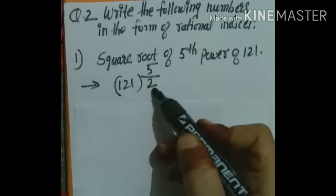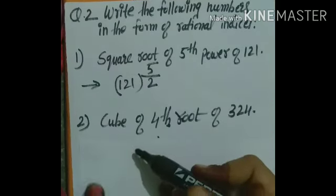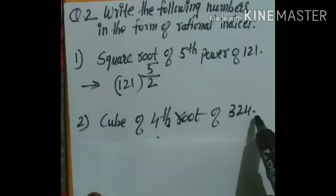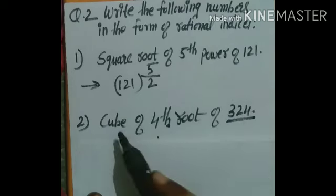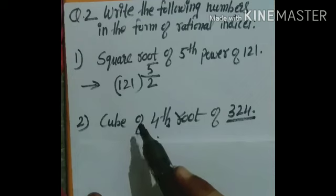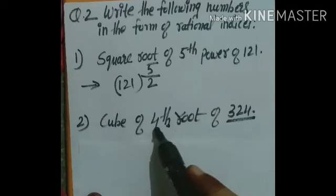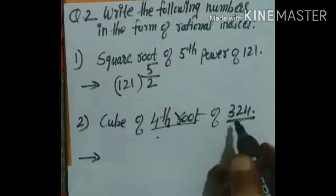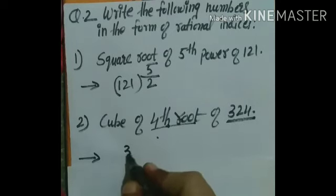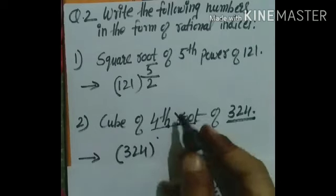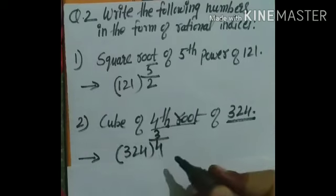Second question: cube of the fourth root of 324. Here 324 is the base number. Cube means it is the numerator — that is the power 3 — and fourth root means it is the denominator 4. So we write: 324 raised to 3 upon 4.